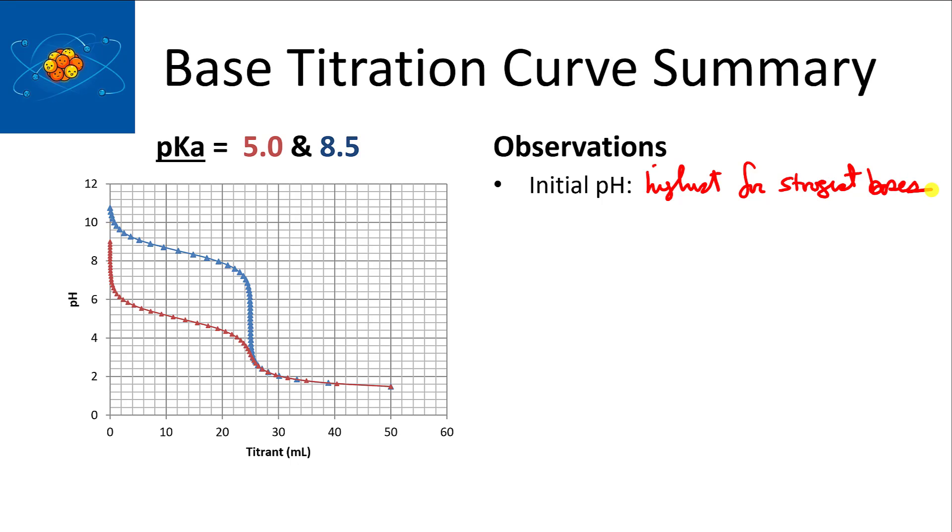And then midpoint pH is still equal to pKa. So that is, again, if this is at 25, then at 12.5 these are the pKa's. These are actually the pKa's for the acids. You can actually look at those graphs a little closer if you want and see that that's true.